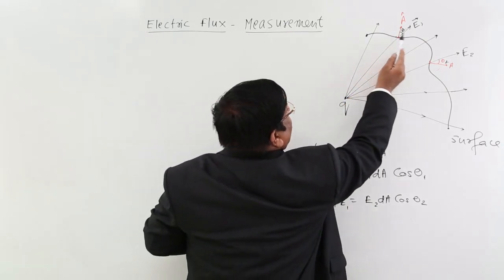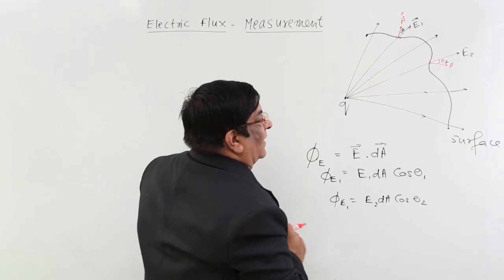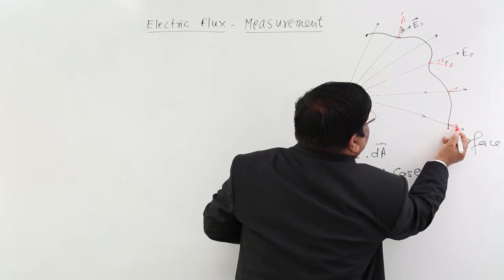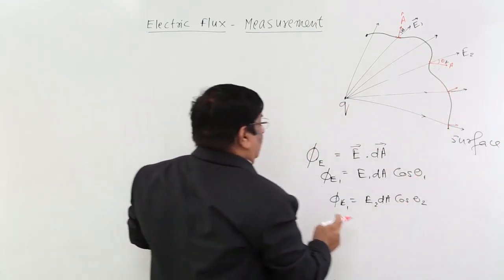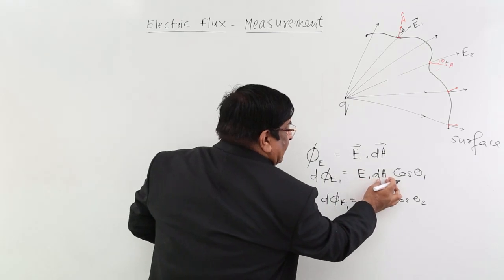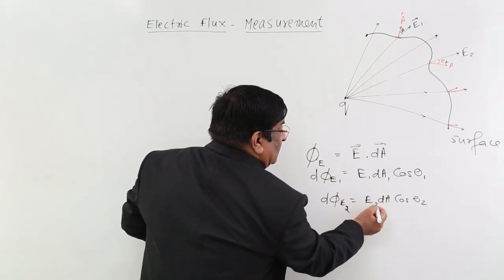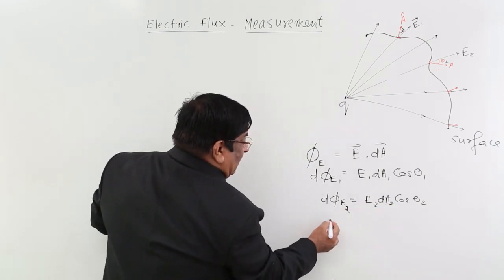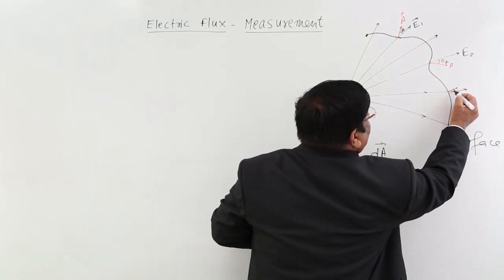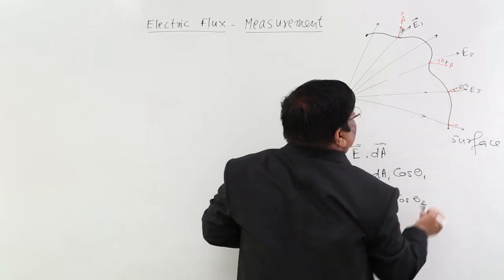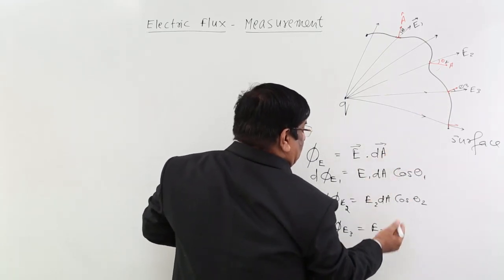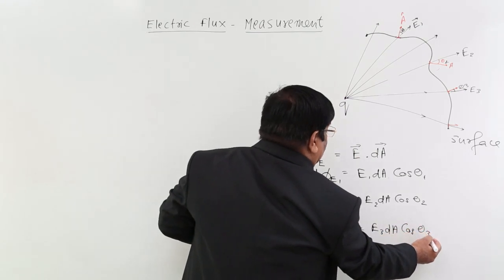Similarly, we take the flux here, for all these small areas. We calculate d phi 1, d phi, small flux in the small area. Then again, small flux, d phi E3 is equal to E3. Here this is theta 3, this value is E3 and this small area dA and cos theta 3. In this way, we have taken small flux at all the places.